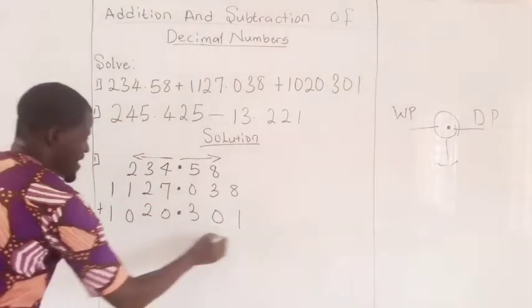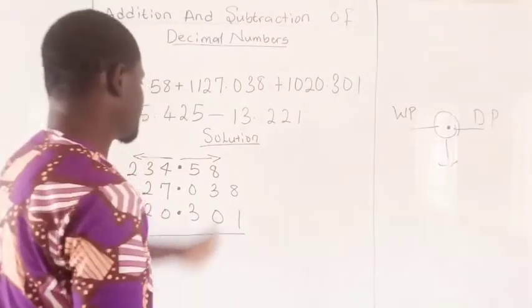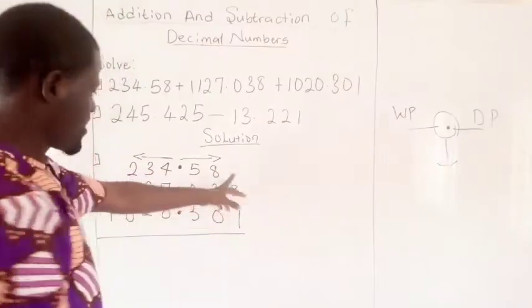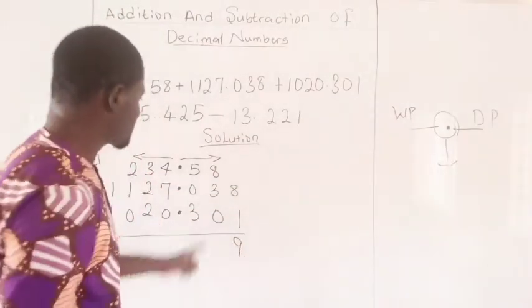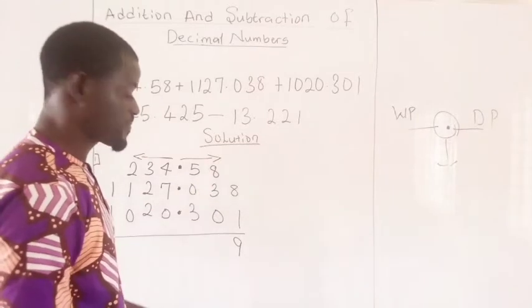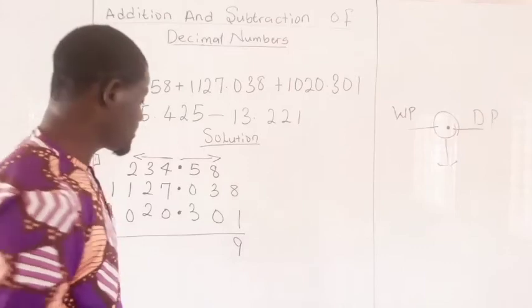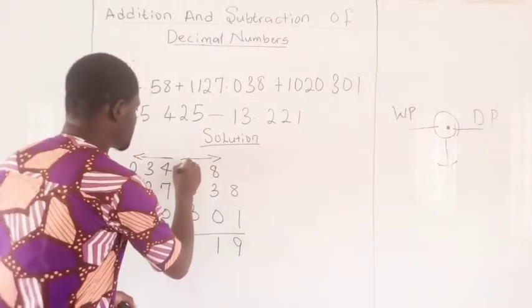Now, you can add. You can add, starting from the right-hand side. This way. Eight plus one is nine. Eight plus three is eleven. Eleven plus zero is still eleven. You are going to write the eleven, the right one. Move one to the next.